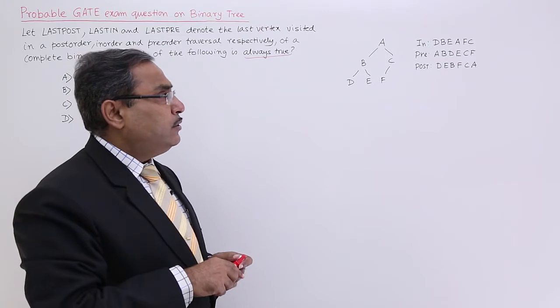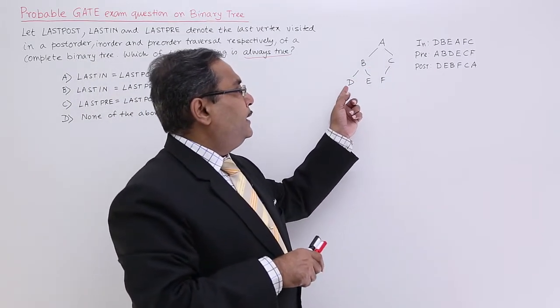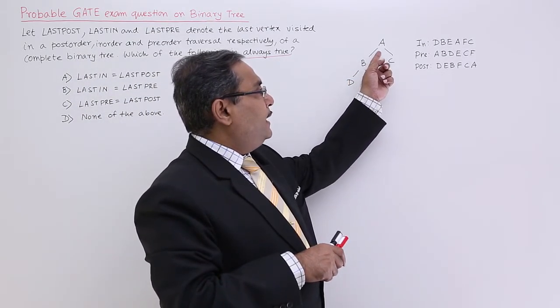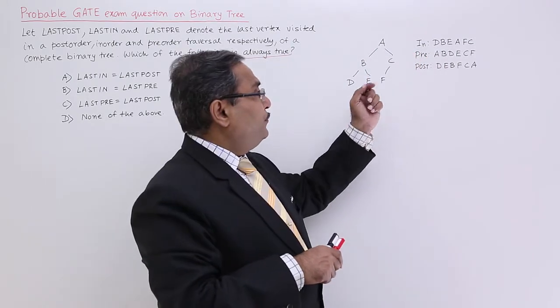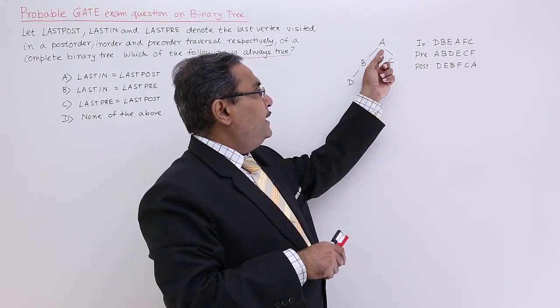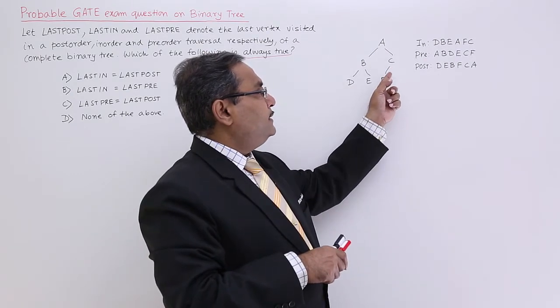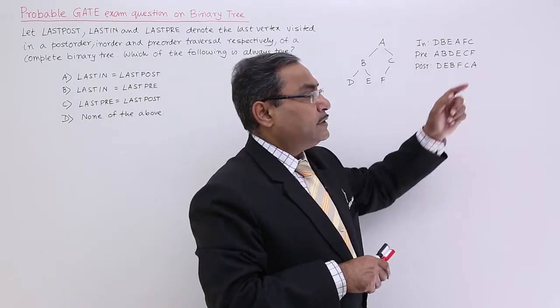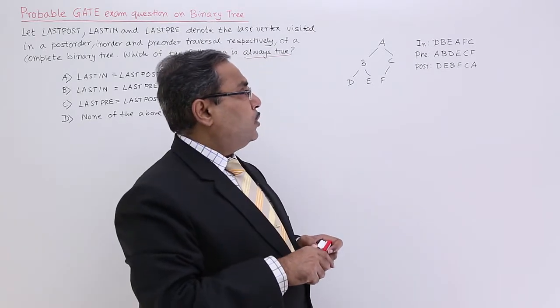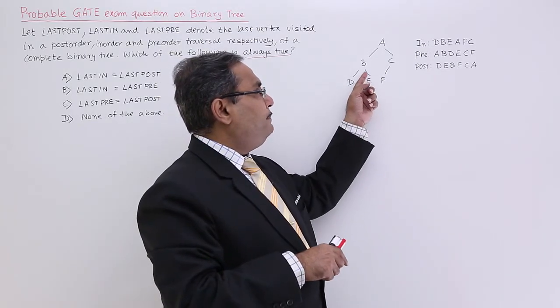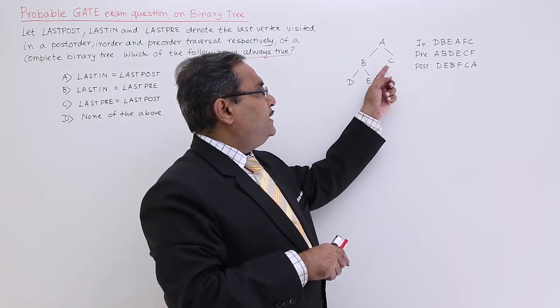If you take the in-order traversal for this, you are getting D, B, E, A, F, C. So, I have written this one. So, if you go for the pre-order traversal, it is A, B, D, E and then C, F. So, that is the pre-order traversal. If you take the post-order traversal, it is D, E, B, F, C, A.